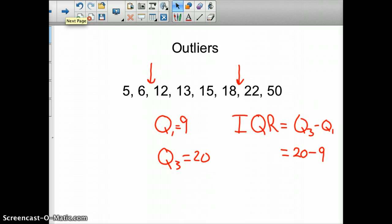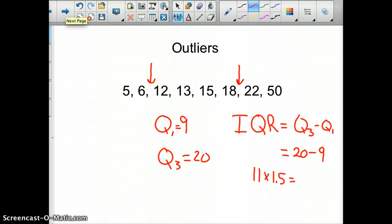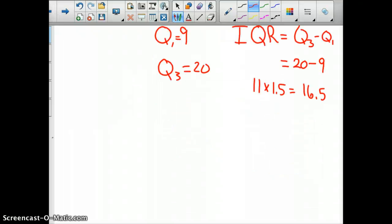Once you have that, you take that number, which is 11, times 1.5. And you get 16.5. You're going to subtract that from your quartile 1 and add that to quartile 3. Anything above or below that is going to be an outlier.